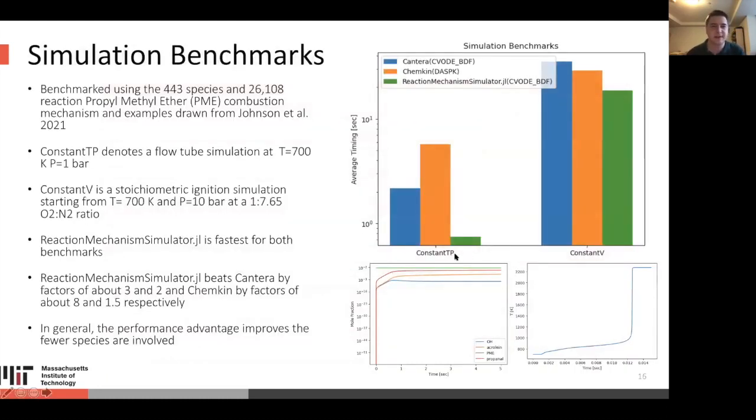Now we ran benchmarks using a 443 species and 26,108 reaction dimethyl ether combustion mechanism. We did two case studies. The first is this constant temperature pressure that denotes a flow tube simulation at 700 Kelvin and one bar. And this constant V is a stoichiometric ignition simulation. You can see the ignition here at 700 Kelvin, 10 bar. RMS is fastest for both of these benchmarks. It beats Cantera by about factors of three and two respectively, and Chemkin by factors of about eight and 1.5 respectively. In general, if we were to decrease the mechanism size, we would expect this performance advantage to increase. However, this 443 size is a more relevant size where you would care more about simulation time. Also our focus on these larger mechanisms makes this the best case study.